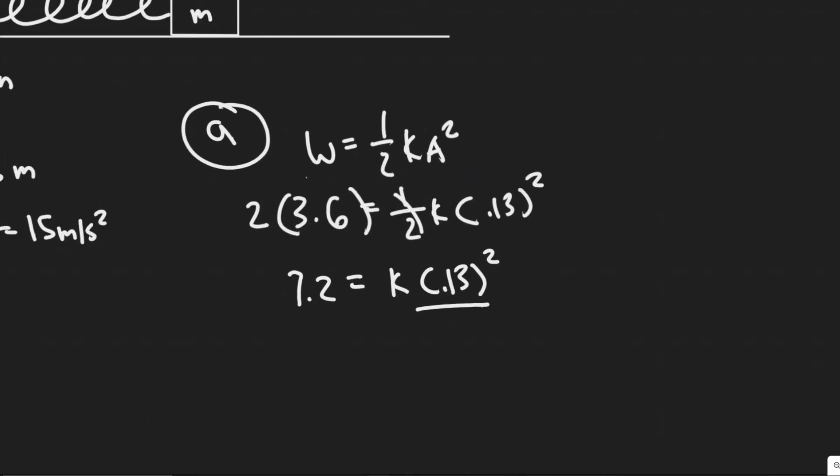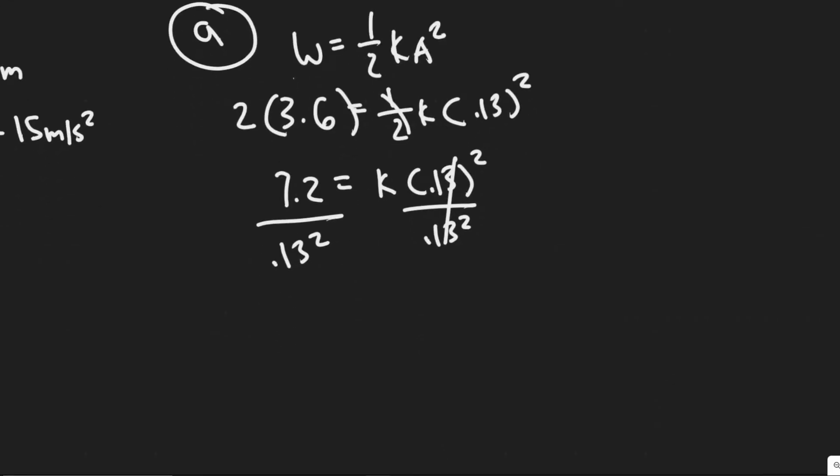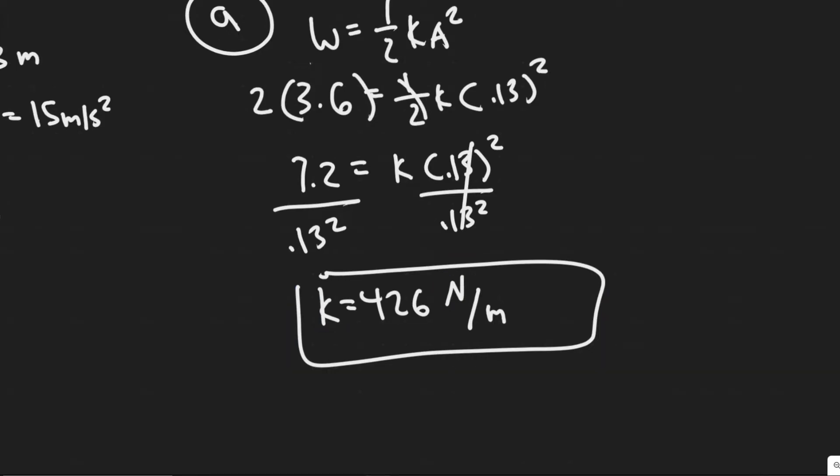Then I'm going to divide by 0.13 squared to get K by itself. So 7.2 divided by 0.13 squared, that'll give us a value equal to 426. And the units of this are newtons per meter. So the spring constant K for this question is 426 newtons per meter, and that's your answer to A.